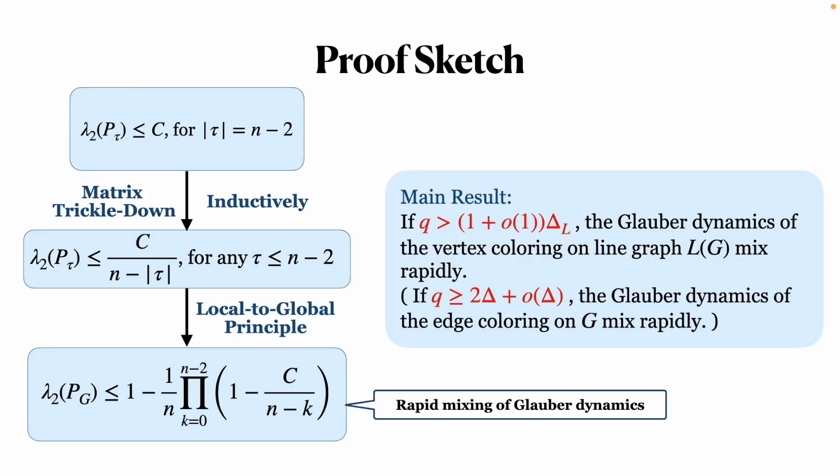In summary, under the condition q > (1 + o(1))Δ_L, we prove that the local walk on the base case is properly bounded, and we construct a family of matrices satisfying the constraints in matrix trickle-down theorem. Finally, using local-to-global principle, we obtain the rapid mixing of Glauber dynamics.